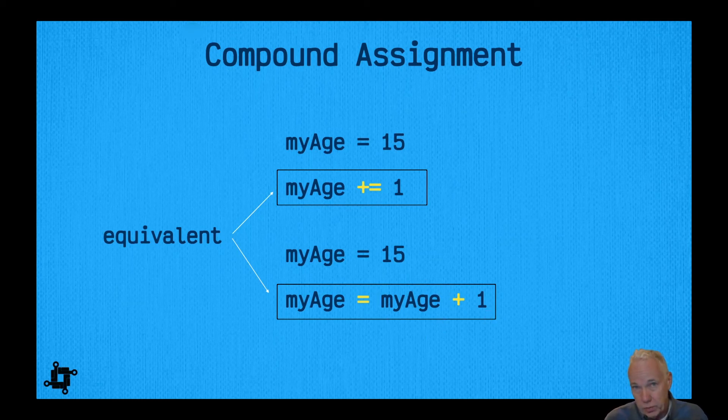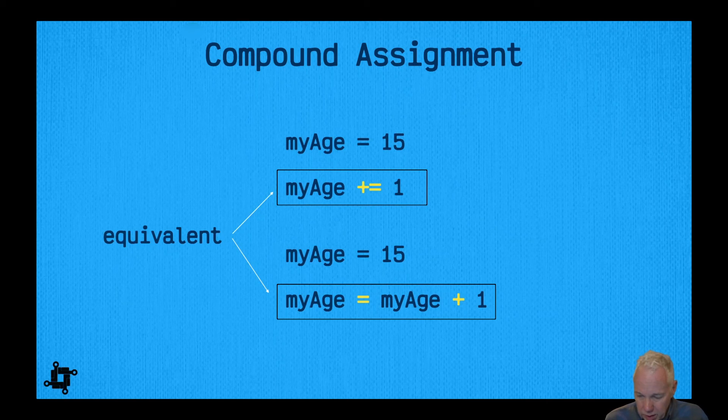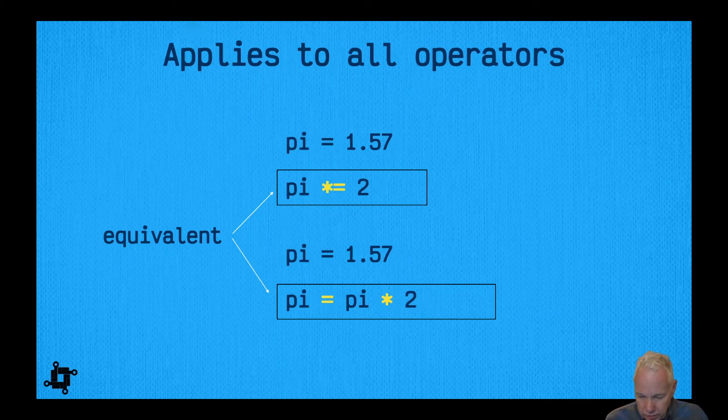However, another way to do it is like this: we can use the plus equal sign, and what this is implying is basically the same as this. It's saying add 1 to myAge and then assign it to myAge. This is what we refer to as a compound assignment. For compound assignments, you can basically do this for all of the different operators.